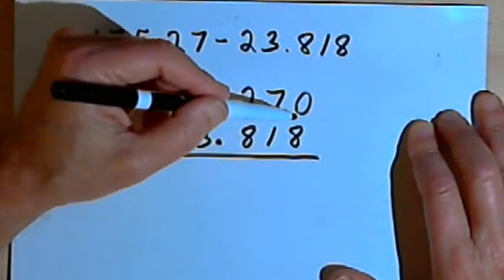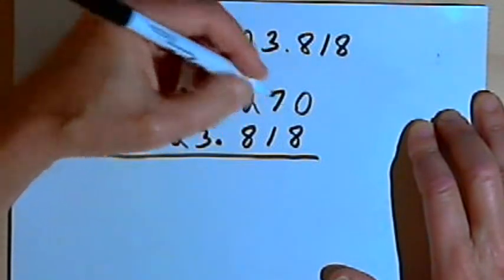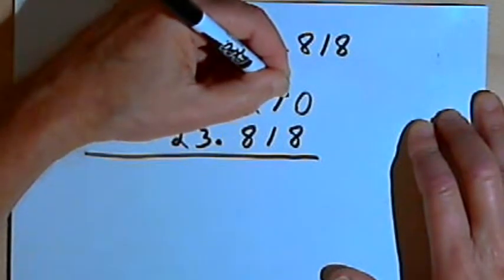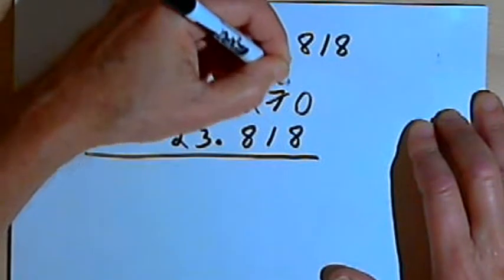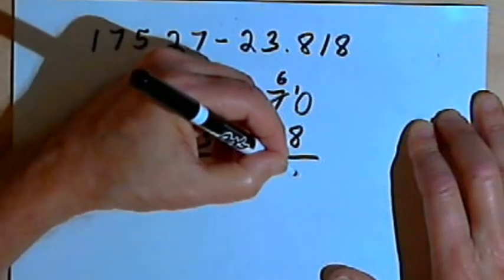Since I can't do that, I'm going to have to borrow from the next column or do renaming. So the 7 is going to become a 6 and the 0 will become a 10. Now I can subtract 8 from 10, and that's 2.